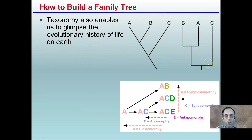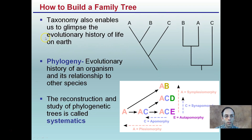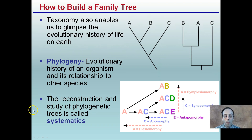How things look and how to build a family tree — taxonomy also enables us to glimpse the evolutionary history of life on Earth. Phylogeny is the evolutionary history of an organism and its relationship to other species. The reconstruction and study of these phylogenetic trees is also called systematics.